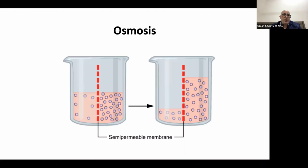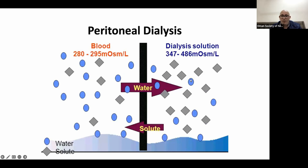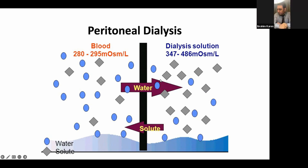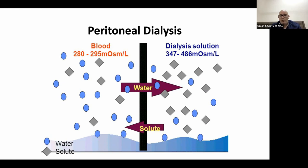The next basic principle is osmosis, which is the cornerstone for ultrafiltration in peritoneal dialysis — the movement of solvent from an area of low concentration to an area of high concentration across a semi-permeable membrane, driven by osmotic pressure. The solution, either icodextrin or glucose, is more osmolar than blood and removes fluid through it. Small solutes move freely, especially by diffusion.